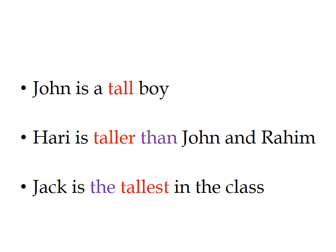Let us examine three cases using the same adjective in three forms. The first: 'John is a tall boy.' It's a simple, plain statement. John is a boy, and his quality is that he is tall. The adjective 'tall' qualifies the noun 'boy.' He is not short or fat, but tall.